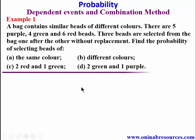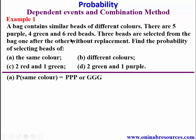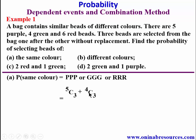Starting with part a, for the same color we can have three purple, three green, or three red. That is, we are selecting three from the five purple, or three from the four green, or three from the six red. By the combination method it is going to be 5C3 plus 4C3.